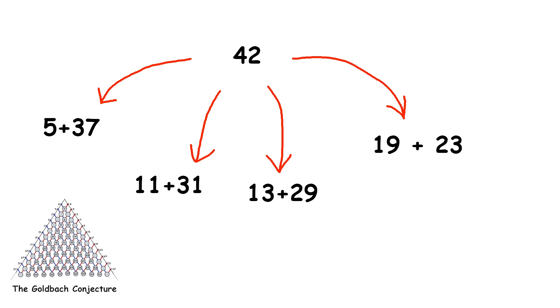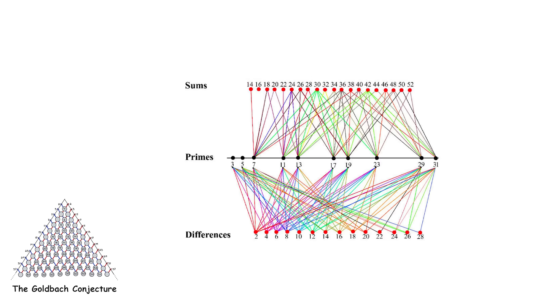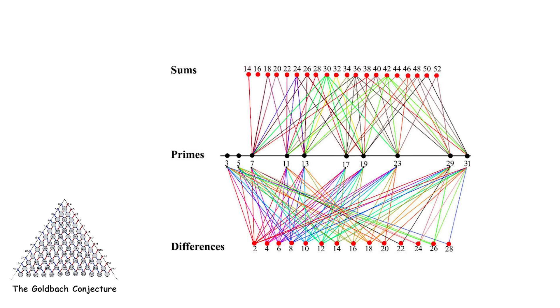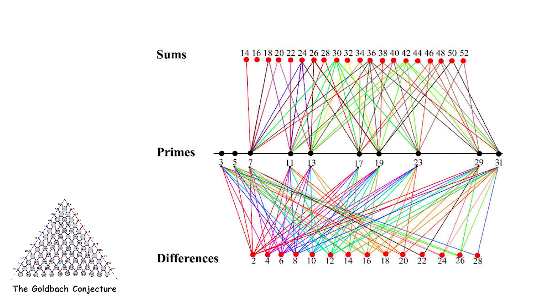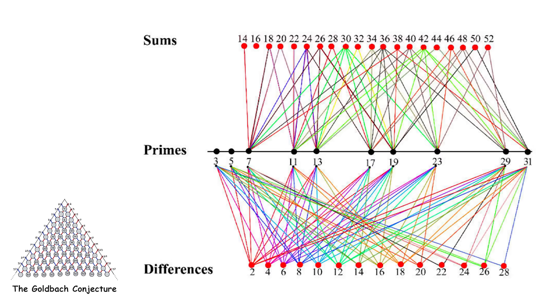So it feels like Goldbach's conjecture is an understatement for very large numbers. Still, a proof of the conjecture for all numbers eludes mathematicians to this day. It stands as one of the oldest open questions in all of math.